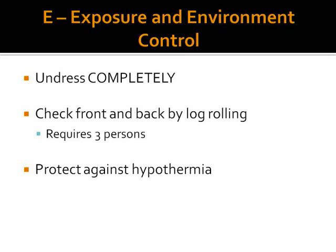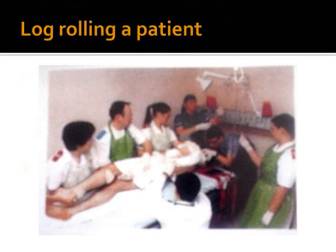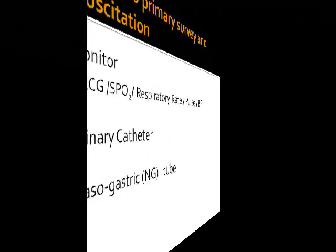The last step of the primary survey is Exposure. We undress the patient completely and then log roll the patient to check the back — this requires three persons. When we log roll the patient, we make sure the patient is protected from hypothermia by warming the room, covering the patient when not examining, and by giving warm intravenous fluids.